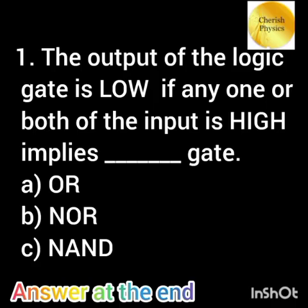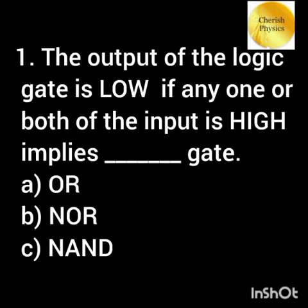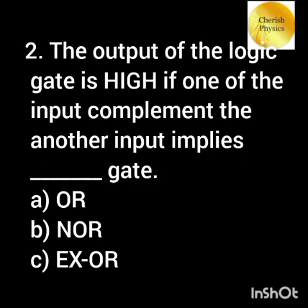The output of the logic gate is low if any one or both of the inputs is high — implies dash gate. The output of the logic gate is high if one of the inputs complements the other input — implies dash gate.